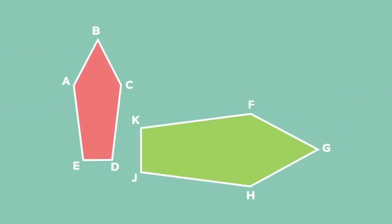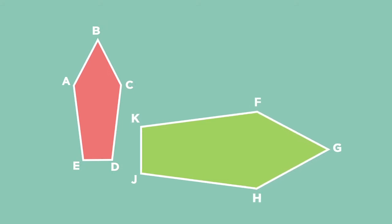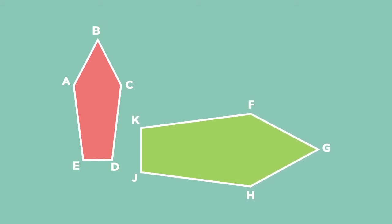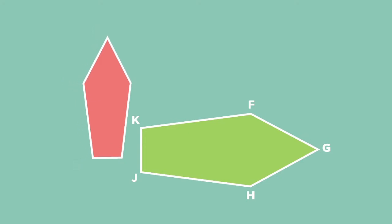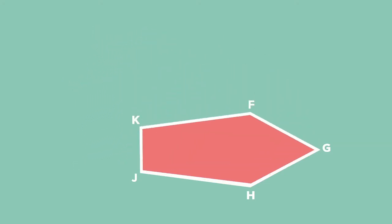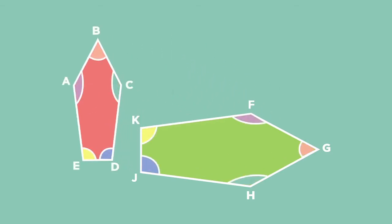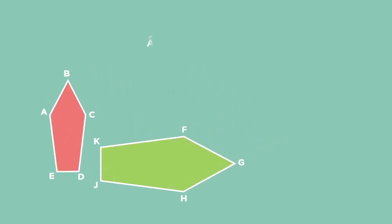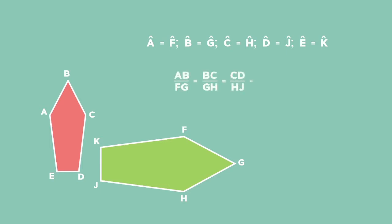Here are two irregular pentagons A, B, C, D, E and F, G, H, J, K. The shapes are the same even though their orientation and sizes are different. The corresponding angles are equal, so angle A equals angle F, angle B equals angle G, all the way to angle E equals angle K. The sides are in proportion, which means that the ratio of AB to FG equals the ratio of BC to GH, and so on.